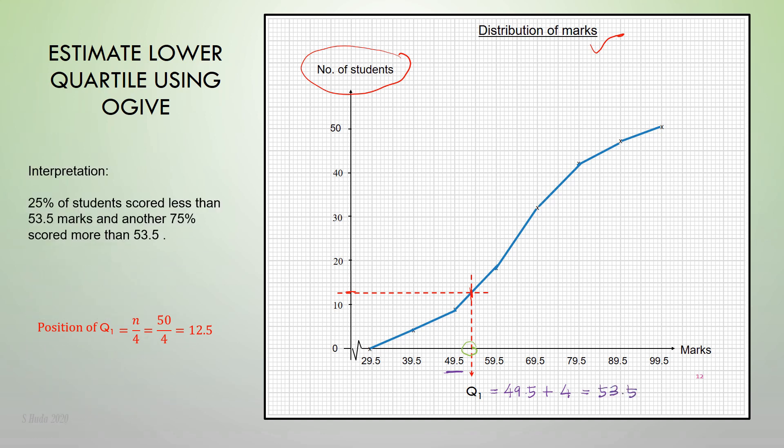How to interpret: 25% of students scored less than 53.5 marks, and another 75% scored more than 53.5.